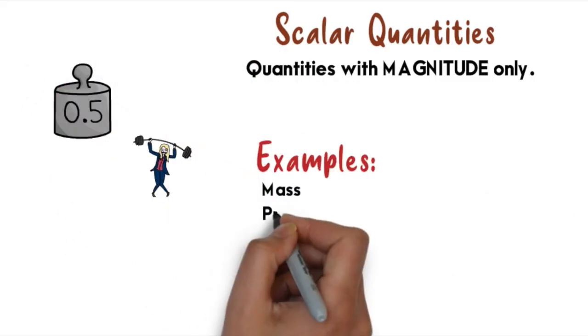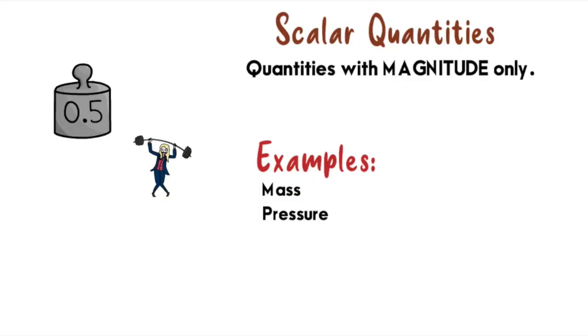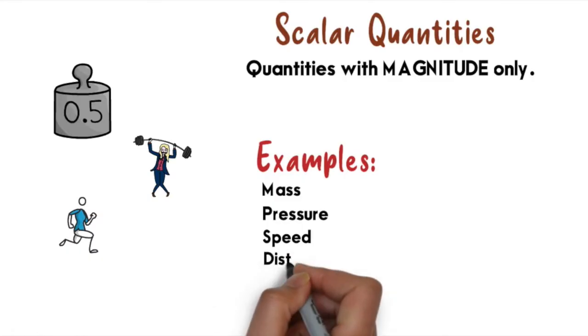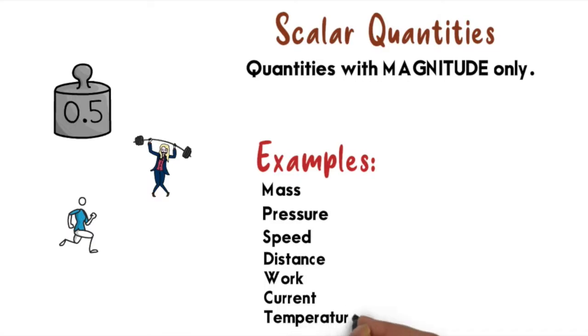Second one is pressure, speed, distance, work, current, temperature, and others.